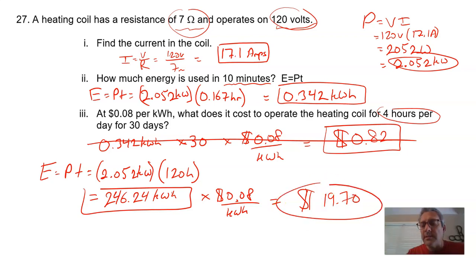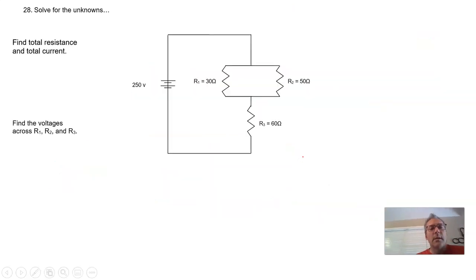246.24 times 0.08 is $19.70. So the takeaway in this kind of problem is that you can calculate how much it's going to cost you to use something if you know its electrical power. Power is voltage times current. You can use that for anything electrical in your home. If you know the power and you know the time, multiply power times time to figure out the kilowatt hours, then use the cost factor.